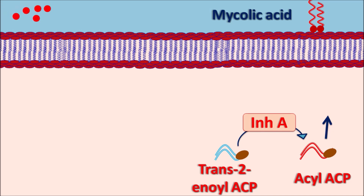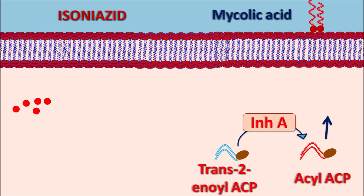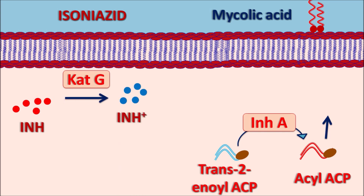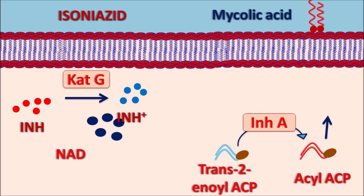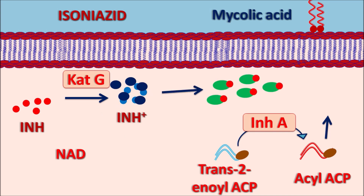Isoniazid acts as a prodrug. These isoniazid molecules, abbreviated as INH (isonicotinyl hydrazide), enter into the mycobacterial cell. INH is oxidized by the enzyme catalase-peroxidase, coded by the gene KatG, in the presence of hydrogen peroxide, converting isoniazid into the isonicotinyl radical ion (INH+). This radical ion then interacts with NADH to form an adduct called INH-NAD.